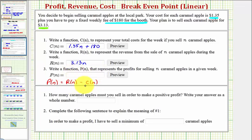So the money coming in minus the money going out equals the profit. So in this case, we would have the revenue function, 3.13n, minus the cost function, which is 1.35n plus 180.